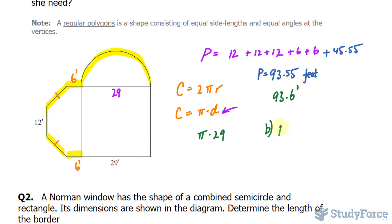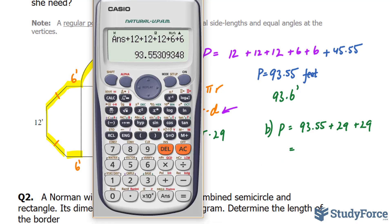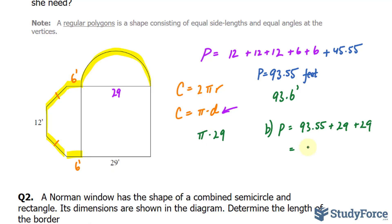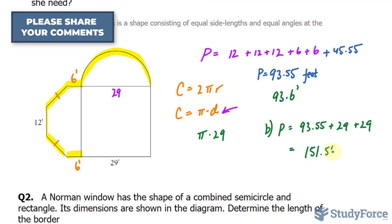So for part b, the perimeter is equal to 93.55 plus 29, plus 29, or simply 29 times 2. Using our calculator again, plus 29, plus 29, giving us 151.55. 151.55 feet around this house.